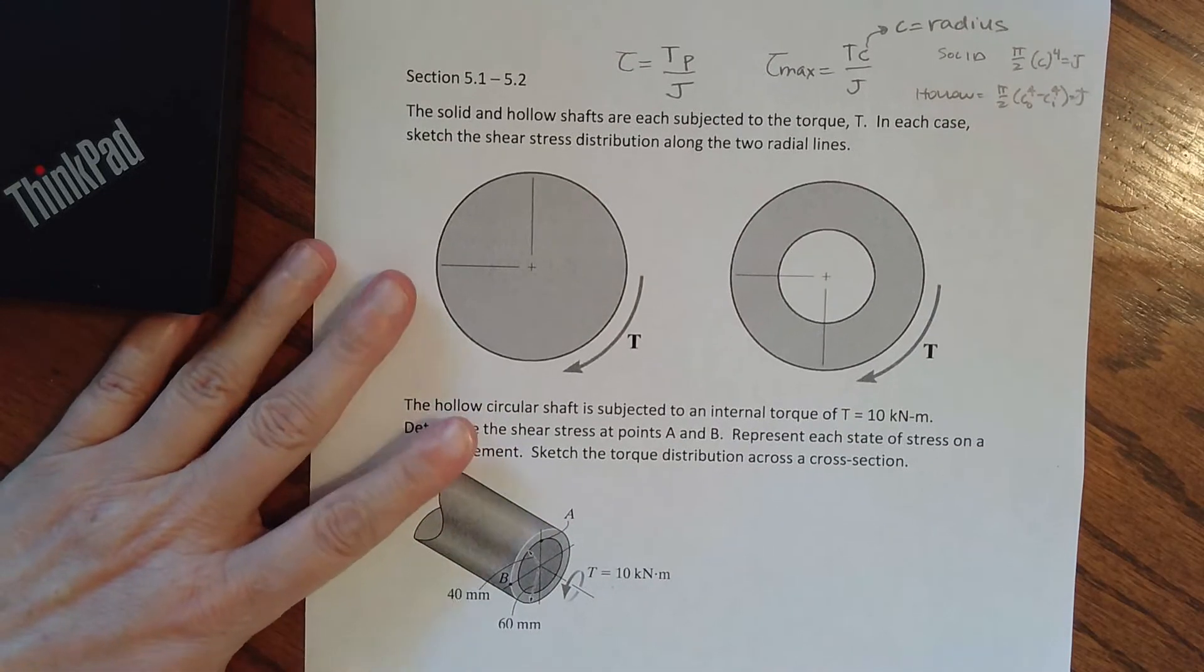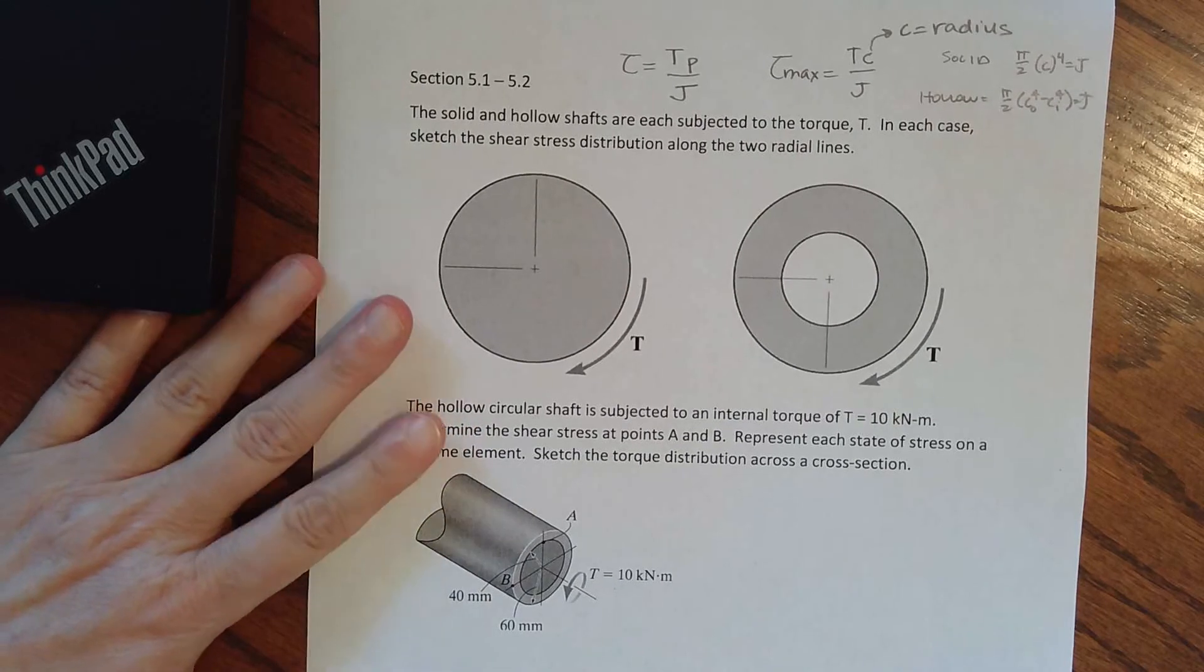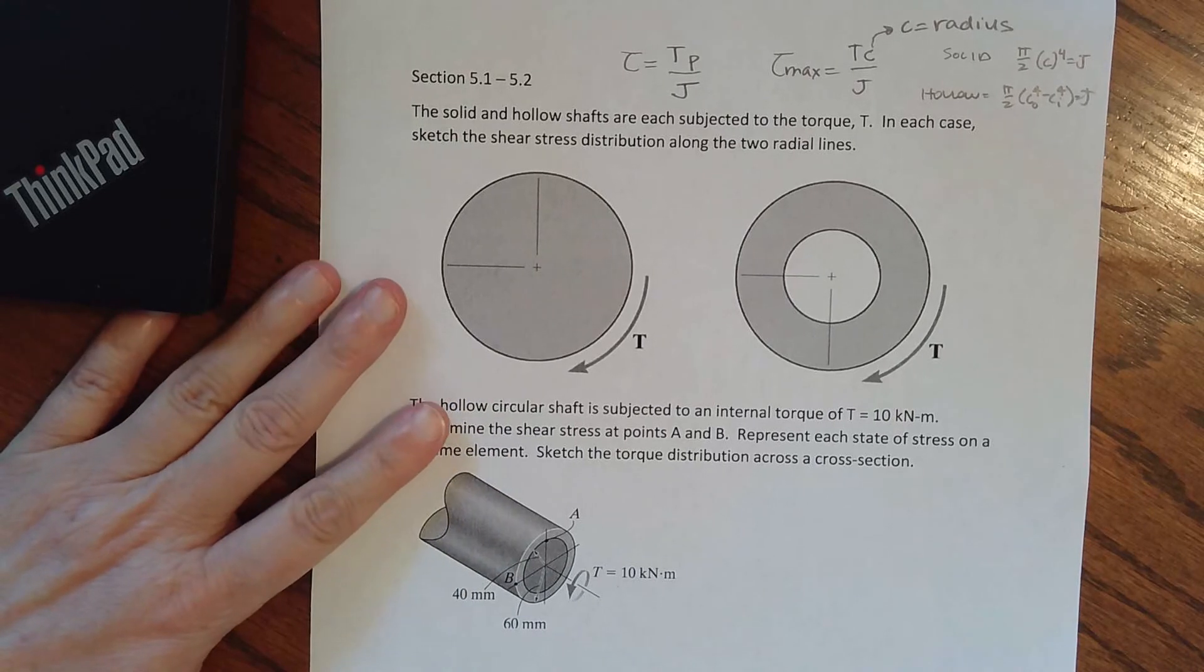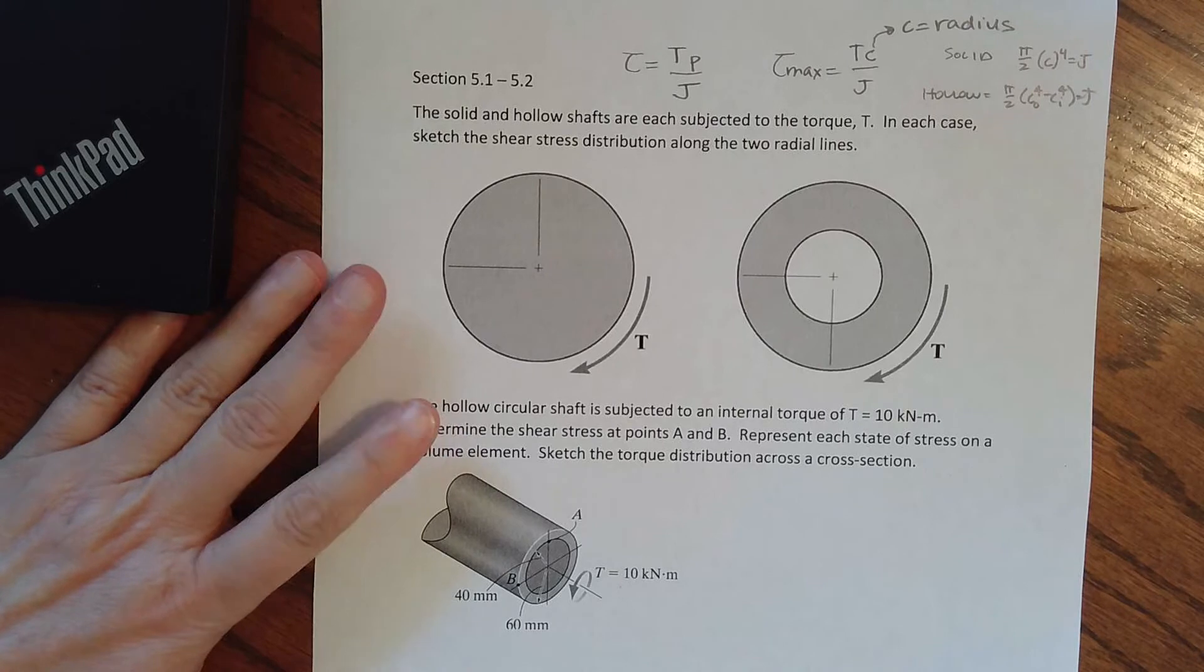This first question just says we have solid and hollow shafts each subjected to the torque T. In each case, sketch the shear stress distribution along the two radial lines.